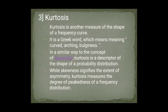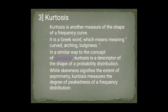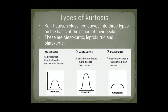Now, kurtosis. Kurtosis is another measurement — the shape of a frequency curve. If we look at the shape of the curve, we measure it with kurtosis. Kurtosis is a Greek word which means curved, arching and bulginess. We will know how our kurtosis is and whether our variable is following normal distribution or not. Skewness shows asymmetry, but kurtosis is the degree of peakness of a frequency distribution. Carl Pearson has divided kurtosis into three curves on the basis of their peak shapes: mesokurtic, leptokurtic, and platykurtic.